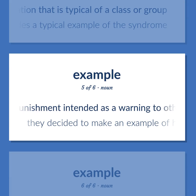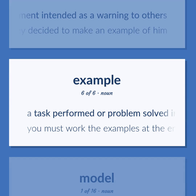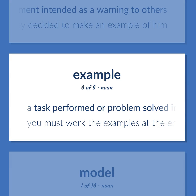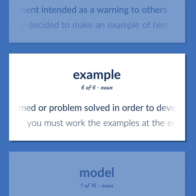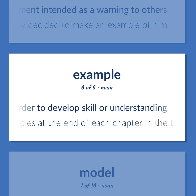Example: punishment intended as a warning to others — 'They decided to make an example of him.' A task performed or problem solved in order to develop skill or understanding — 'You must work the examples at the end of each chapter in the textbook.'